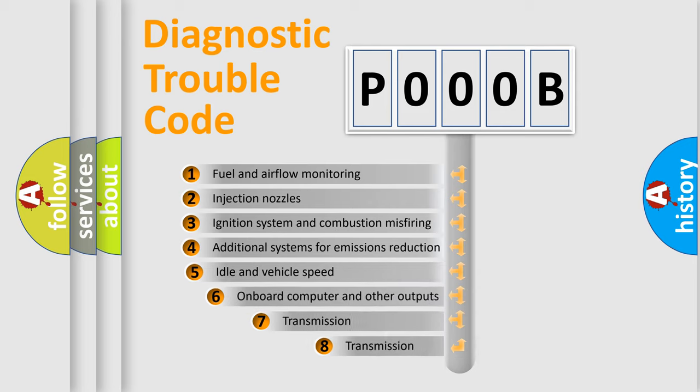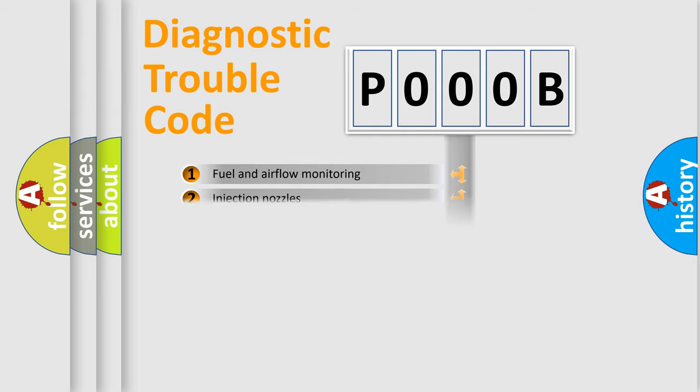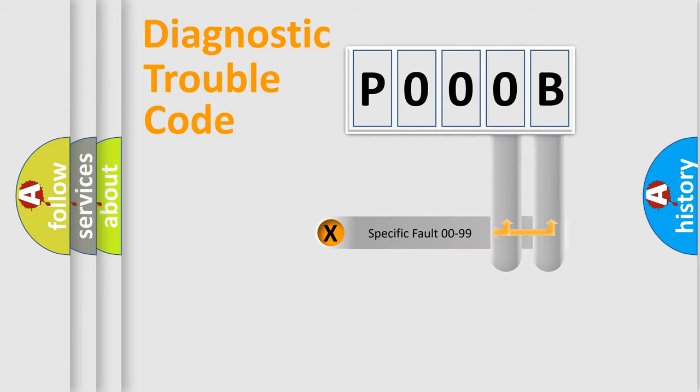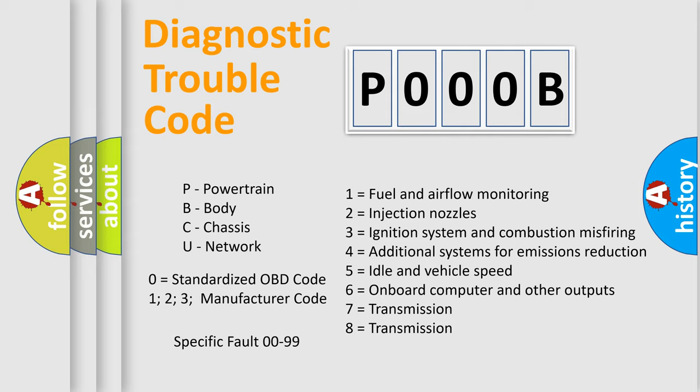The third character specifies a subset of errors. The distribution shown is valid only for the standardized DTC code. Only the last two characters define the specific fault of the group. Let's not forget that such a division is valid only if the second character code is expressed by the number zero.